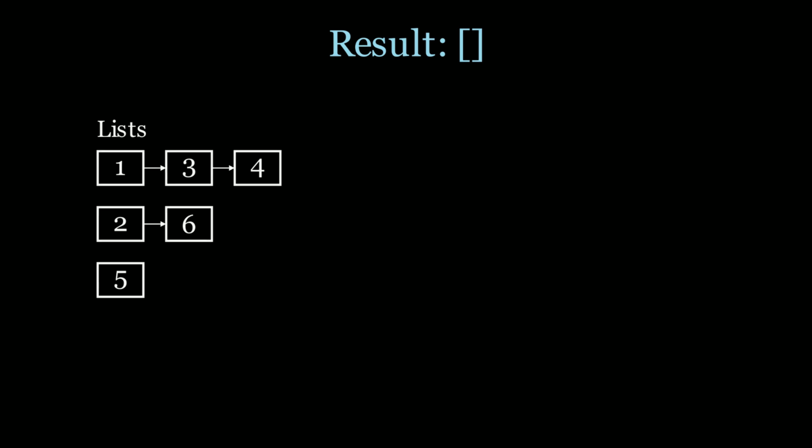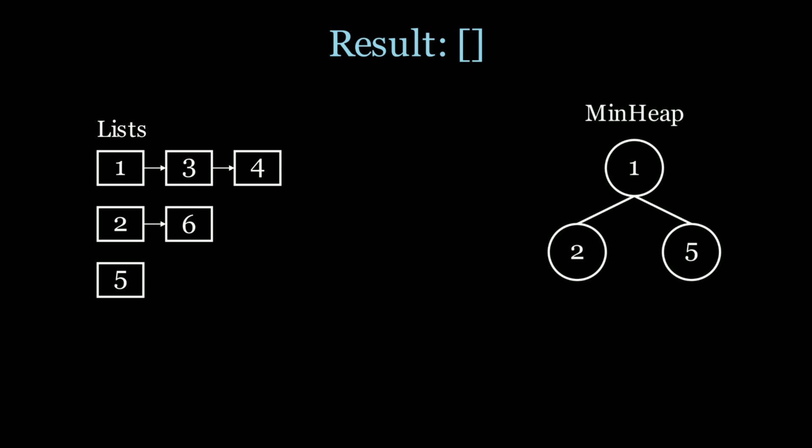Now let's take a look at the heap solution. We have three lists that we want to merge into one sorted list. What data structure could help with that? At every iteration we need to know the minimum value between these three lists. What we could do is put the first node of each list into a min heap, and the min heap is going to keep track of the minimum element to use between all the lists at every iteration. If we add nodes 1, 2, and 5 into a min heap, the min heap will track the minimum node, which in this case is 1. At every iteration I can pop out the minimum node, use that in my result, and then add the next node from that list into the min heap.